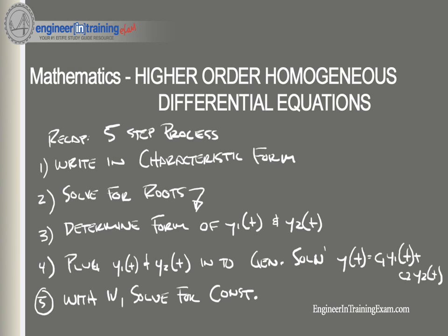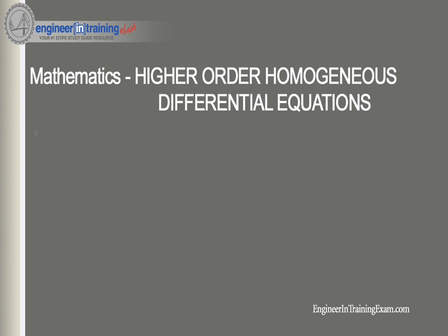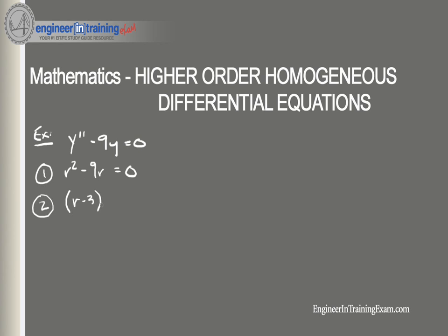Let's check this out using an example. Let's find the solution for the differential equation y'' minus 9y equals zero. Step one: write it in characteristic form by substituting r's for y variables, giving r² minus 9 equals zero. Step two: solve for the roots by factoring — (r minus 3)(r plus 3) — so r1 equals 3 and r2 equals negative 3.